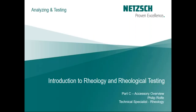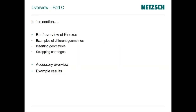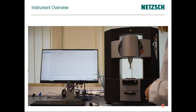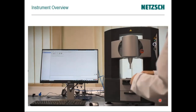Module C is an overview of the accessories, continuing the introduction to rheology and rheological testing. My name is Philip Rolf, one of the specialists here in the USA. In this section we'll have a brief overview of the Connexus, examples of different geometries, inserting and swapping cartridges, a quick overview of different types, and some example results. We have a video featuring Shona, our marketing manager in the UK office, demonstrating some of these accessories.